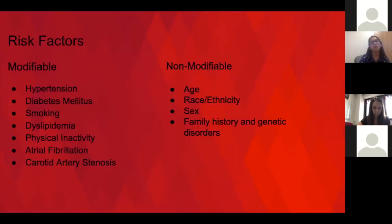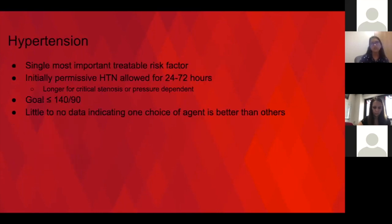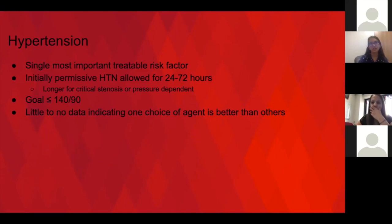We do look at all their risk factors and try to address each of them. The non-modifiable ones are good to keep in mind because we take them into account when discussing recurrent stroke risk with patients. Hypertension is considered one of the most important, if not the most important, treatable risk factor across all strokes, because it is a risk factor for both ischemic and hemorrhagic stroke.